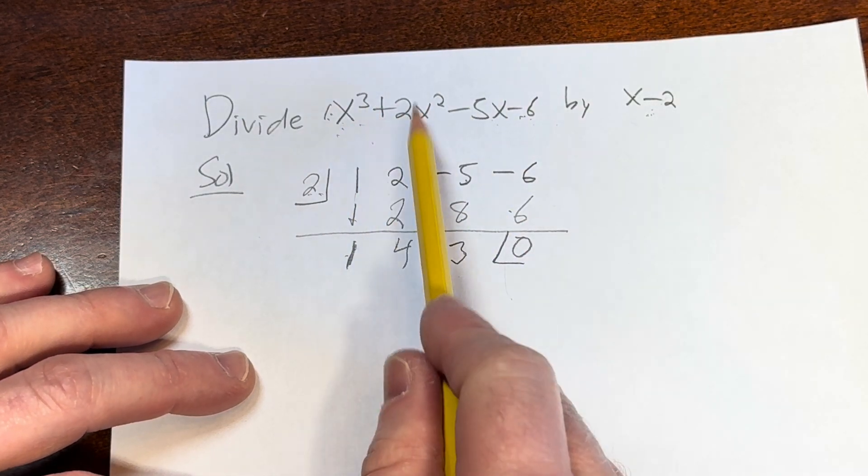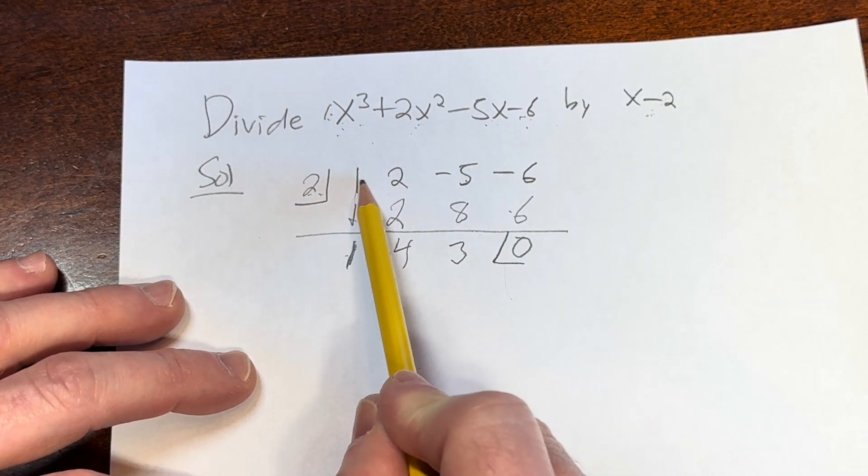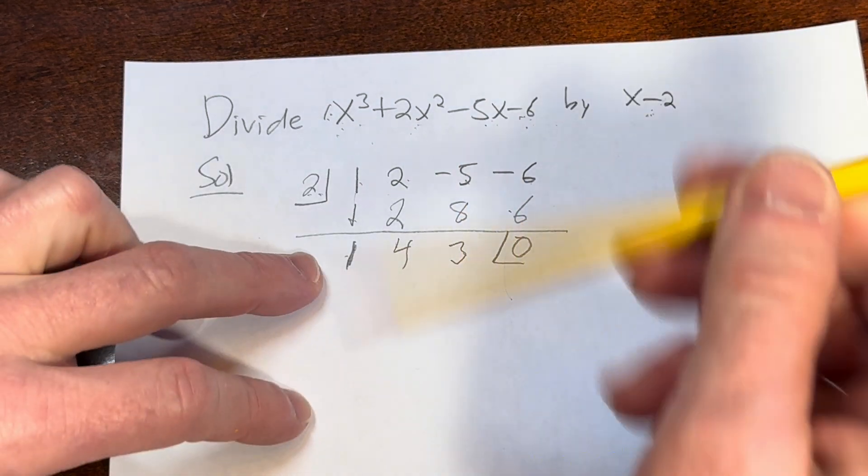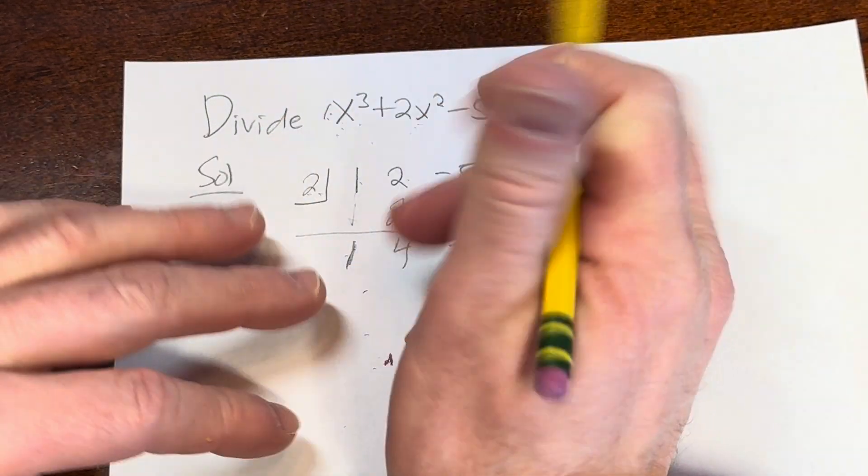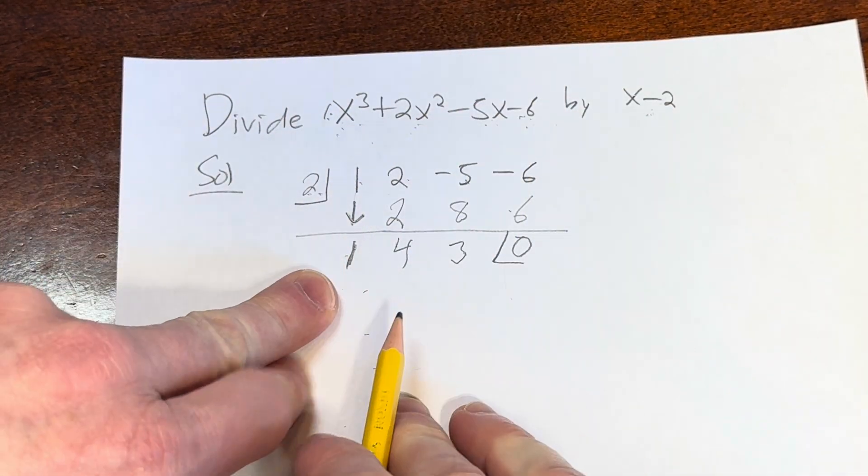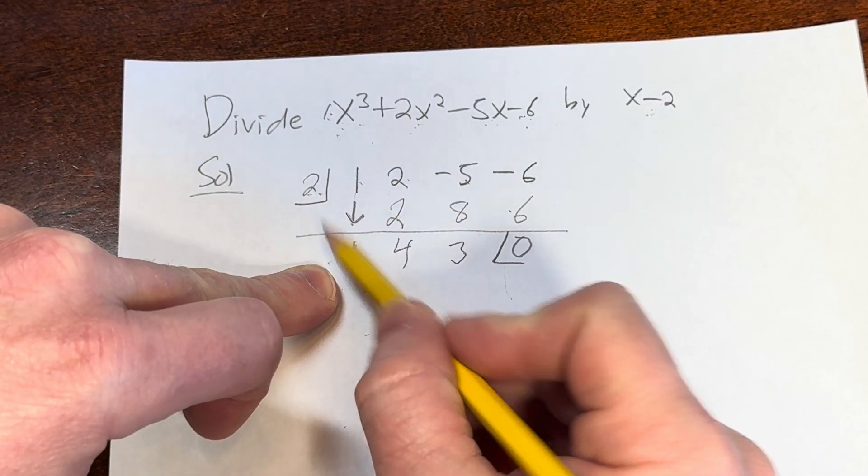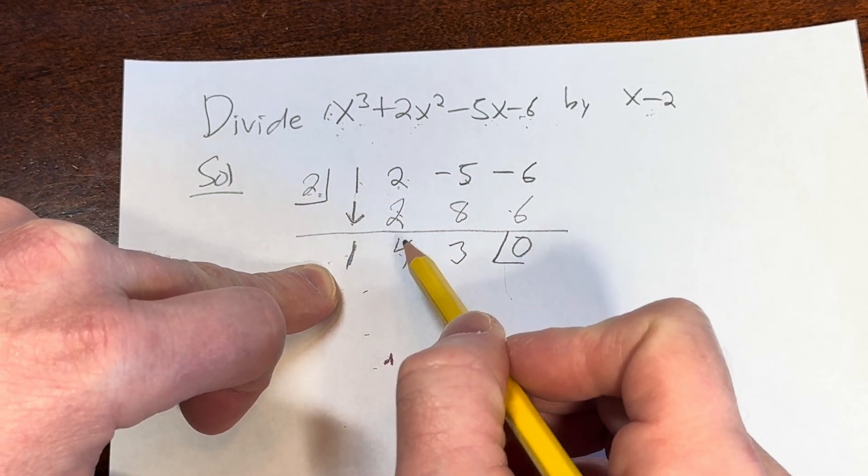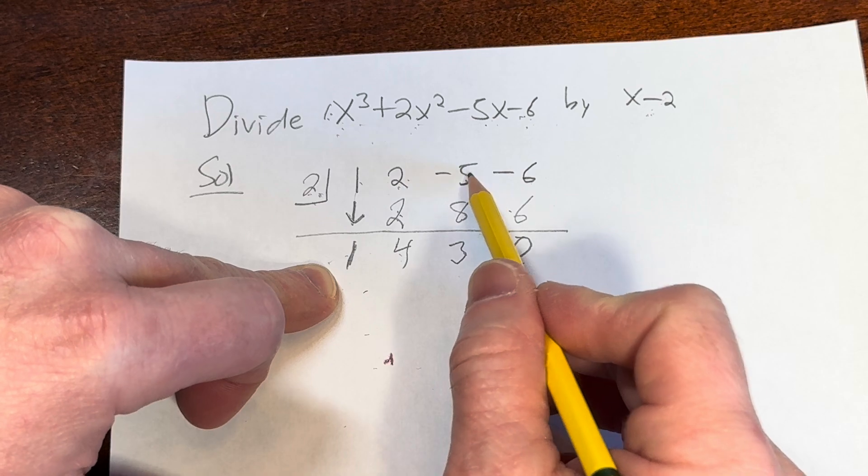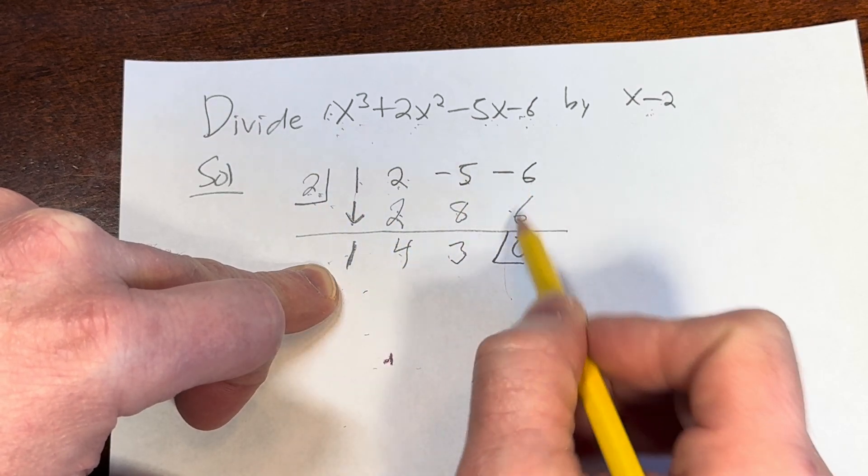Let's do that again. So 1, 2, negative 5, 6... and the very first step, again, is to just bring this number down: 1. Then you start the process. 1 times 2 is 2, 2 plus 2 is 4, 4 times 2 is 8, negative 5 plus 8 is 3, 3 times 2 is 6, we add and we get 0.